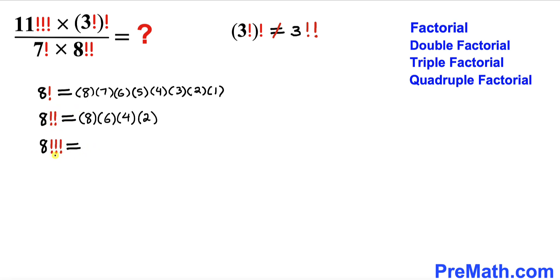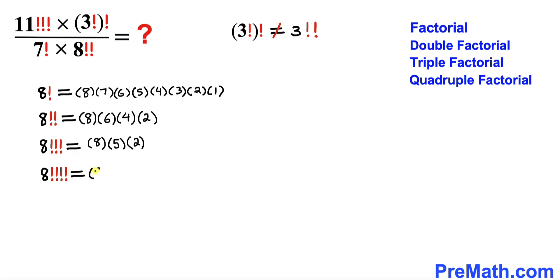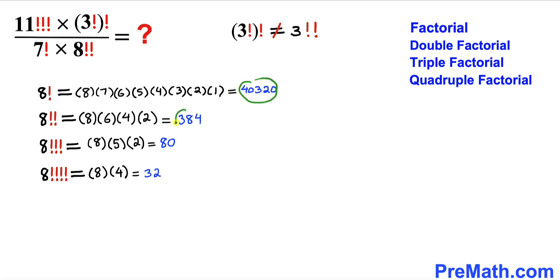For 8 triple factorial, subtracting 3 each time: 8 times 5 times 2. For 8 quadruple factorial, subtracting 4 each time: 8 times 4. Multiplying these out gives the corresponding answers.